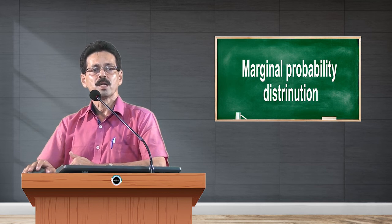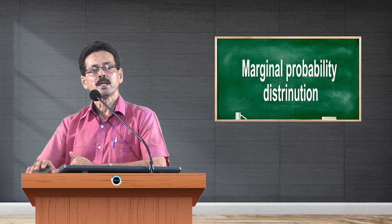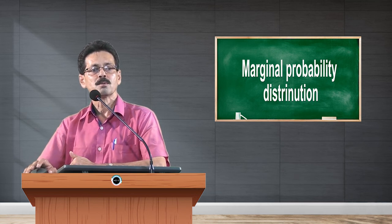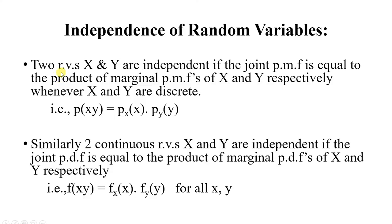Next, independence of random variables. We know the meaning of independent events: two events A and B are said to be independent if probability of A intersection B equals probability of A times probability of B. In a similar manner, two random variables x and y are said to be independent if the joint pmf is equal to the product of their marginal probability mass functions. In notation, p(x,y) equals p(x) times p(y).